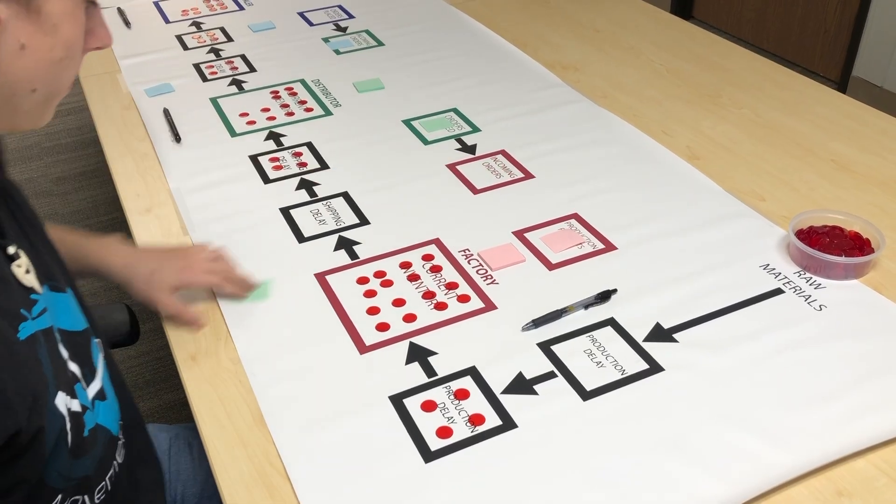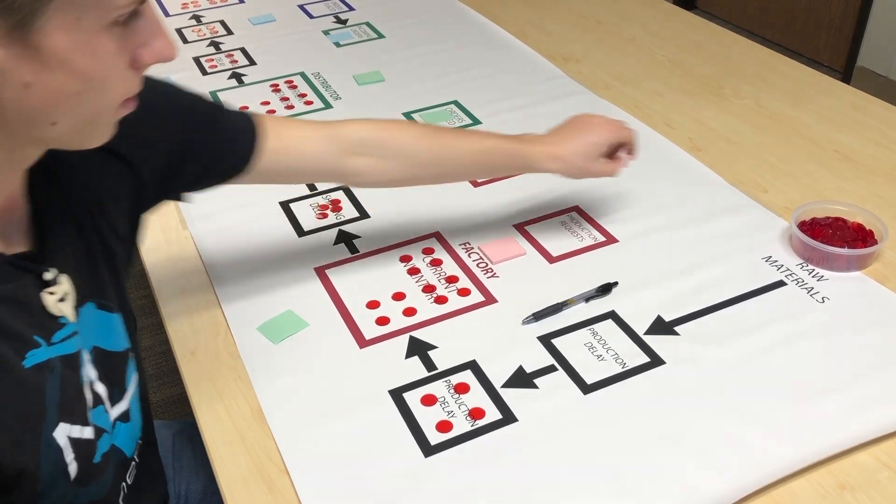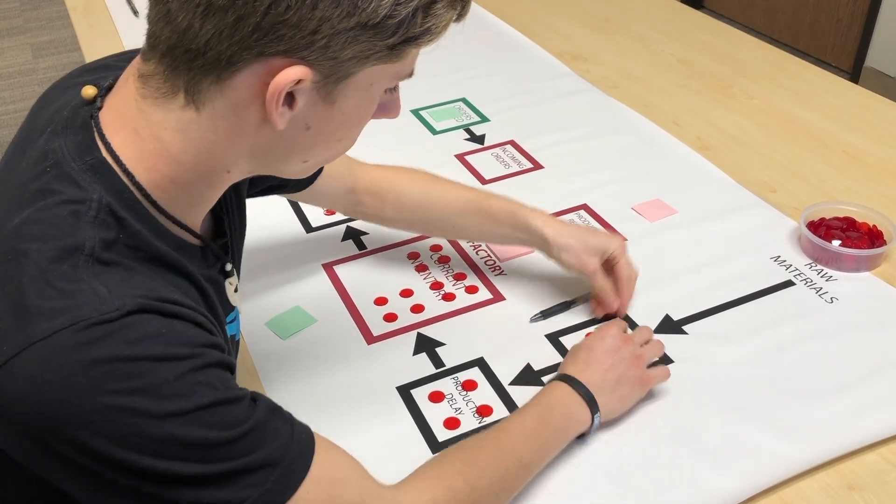The factory checks the incoming orders and pushes the number of cases to the shipping delay. Then they also have to check their production requests and put that number of chips into the production delay from the raw materials.